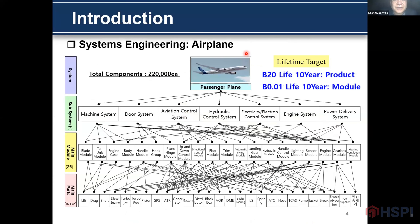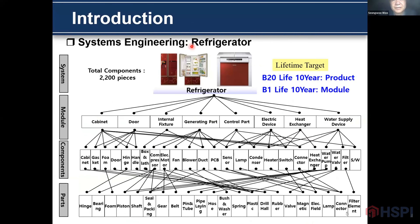This is an airplane. The airplane consists of the machine, door, and aviation control, etc. Total components are about 200,000 pieces with a life target of about 10 years. This is a refrigerator. The refrigerator consists of the cabinet, door, internal fixtures, general components, etc. Total components are about 2,000 pieces with a life target of about 10 years.